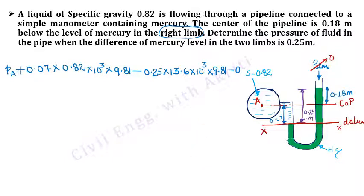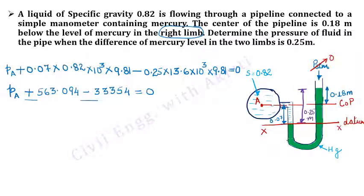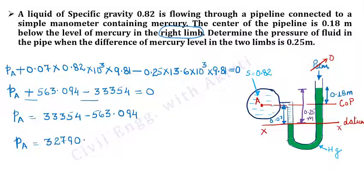I have directly written the equation with values. Solving: PA plus 563.094 minus 33354 equals 0. Taking terms to the other side: PA equals 33354 minus 563.094, which gives PA equal to 32790.906 Newton per meter square.